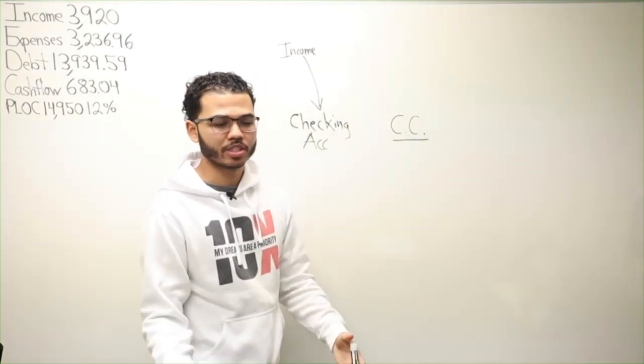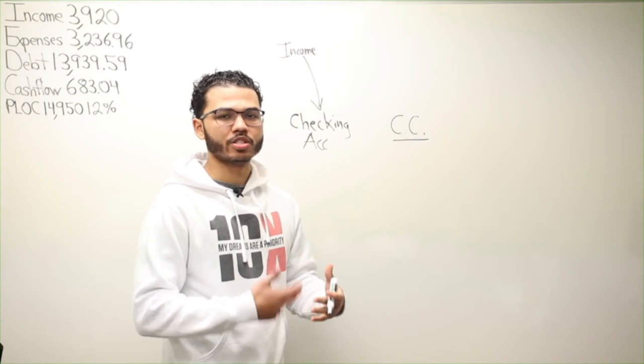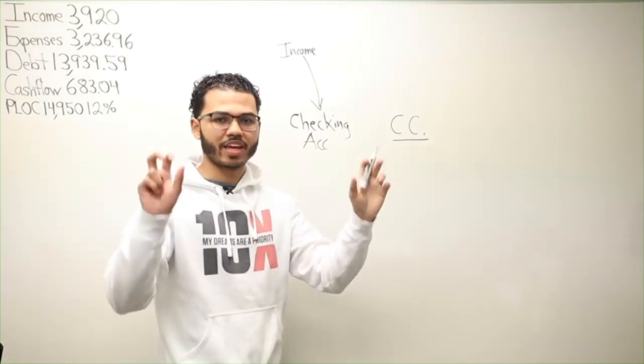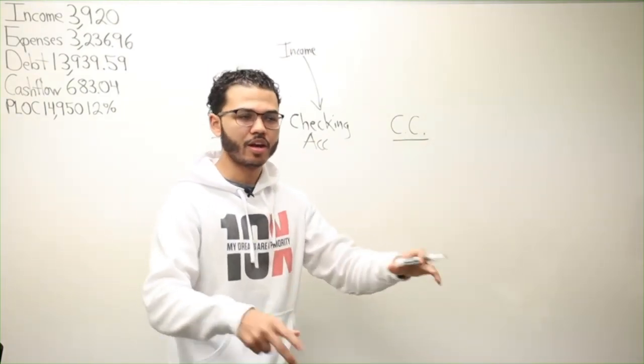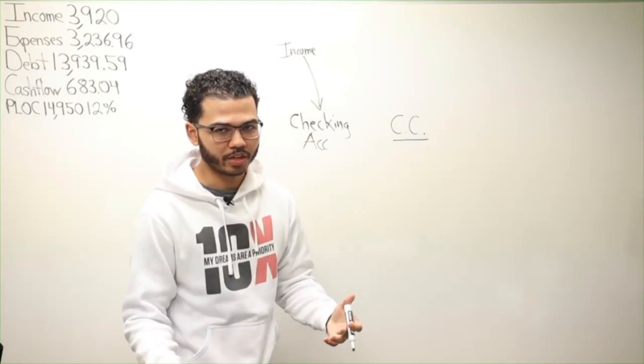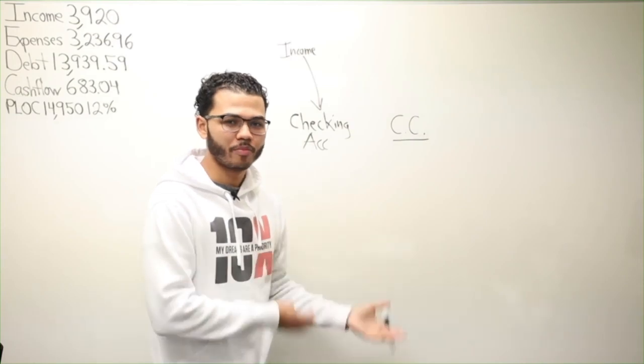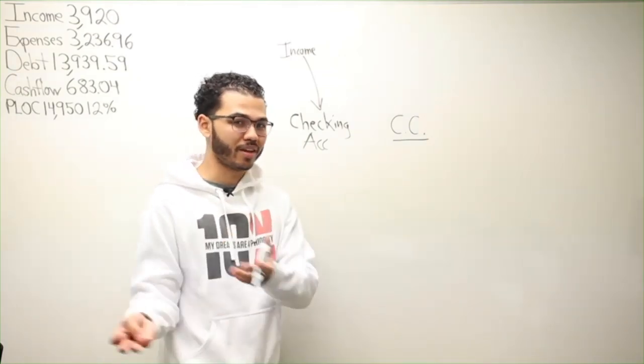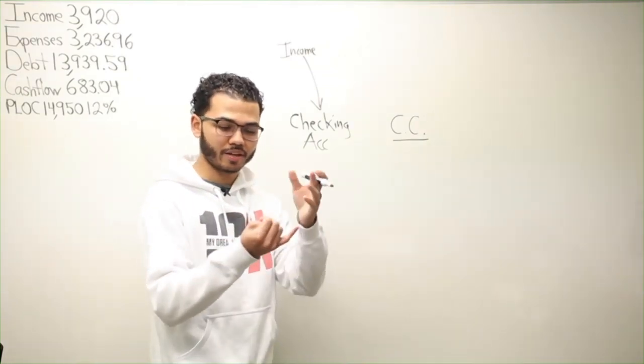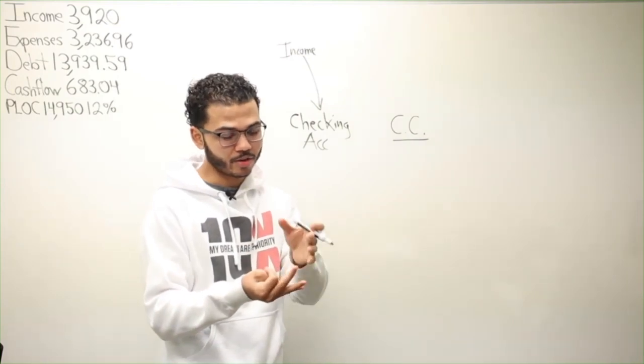That's why I say can't - it can be done, but it's going to cost you money. When we're doing velocity banking, we're trying to minimize our cost of borrowing money. In fact, we're trying to make money in the process by saving money, increasing cash flow, and saving money on interest.